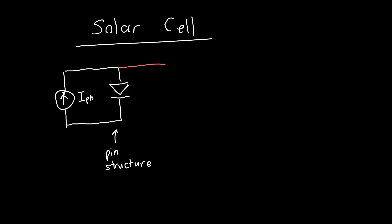Now we're curious what happens when we attach a load resistance to this — some load resistance. We want to extract some energy out of this system. We do that generally by modeling what we attach to the solar cell as a resistor, and we're interested in the current IL flowing through this resistor.